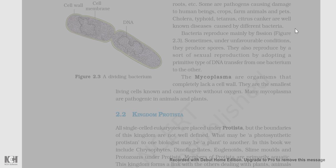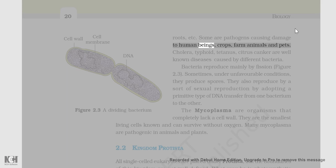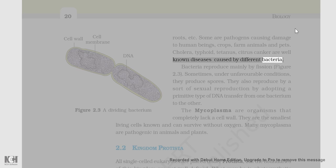Some are pathogens causing damage to human beings, crops, farm animals, and pets. Cholera, typhoid, tetanus, and citrus canker are well-known diseases caused by different bacteria.